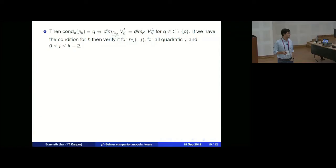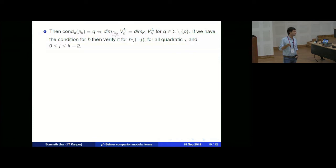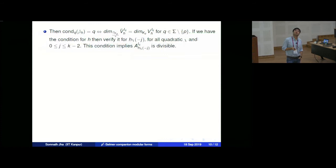Our hypothesis means this divisibility holds for f, and then we verify that the same condition holds when you twist by χ and by the cyclotomic character to the power −j. One checks that if it holds for H, it holds for H(χ·ω^{−j}). At each local place you check the type of local representation and verify this condition. If the level has square factors, this computation becomes too difficult, hence the squarefree hypothesis — which is standard in many modular forms papers.